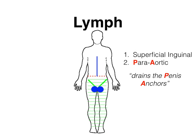In review so far: first, the superficial inguinal lymph nodes drain everything below the belly button down to the feet, except the gonads and the lateral ankle. Those lateral ankle lymph nodes drain to the popliteal lymph nodes behind the knee. The gonads, or 'penis anchors' (PA), drain to the para-aortic lymph nodes found on either side of the abdominal aorta. We've already covered over half the body and where it drains.